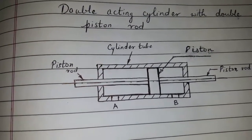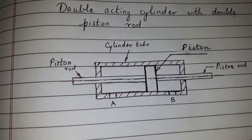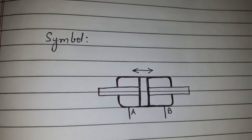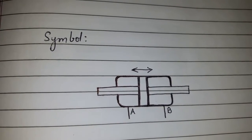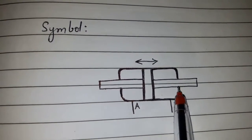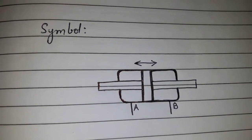The symbol of double acting cylinder with double piston rod looks like this, which is similar to the actual construction. Here, the double piston rod is shown.